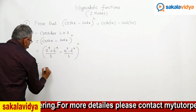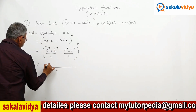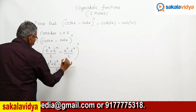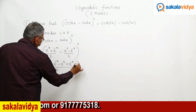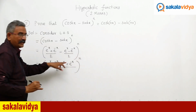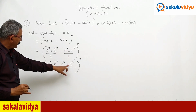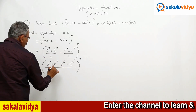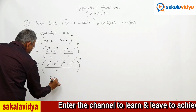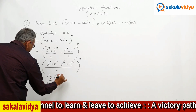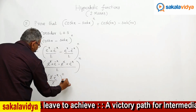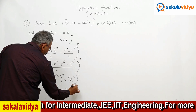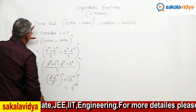Let it be simplified. 2 is the LCM. We get e^x + e^(-x) - e^x - (minus e^(-x)), so these two e^x terms get cancelled. We have 2e^(-x) upon 2, raised to n. The 2s cancel, leaving e^(-x) raised to n. Using the theory of indices, this can be written as e^(-nx). This is the left hand side.